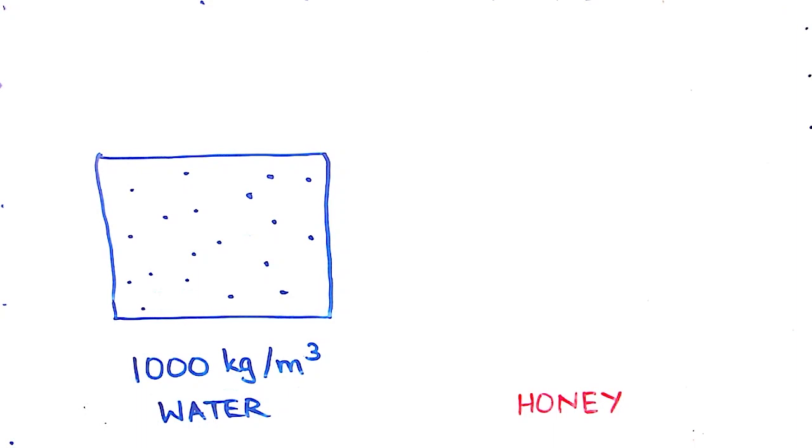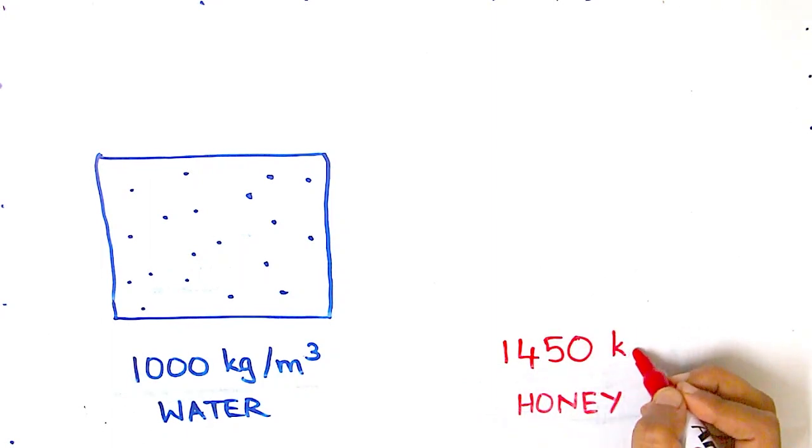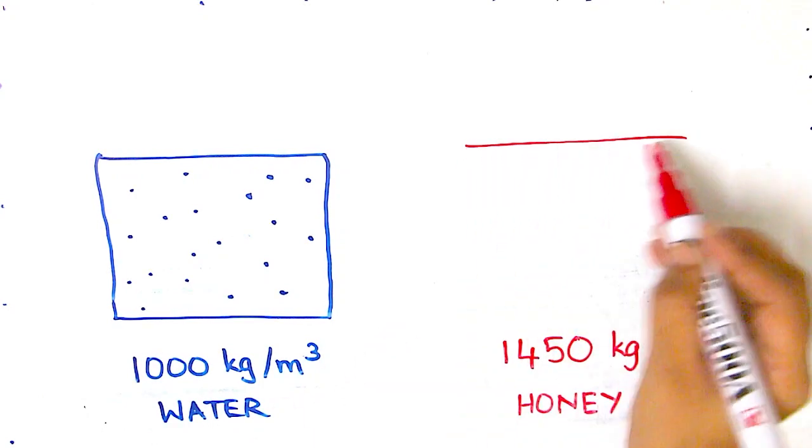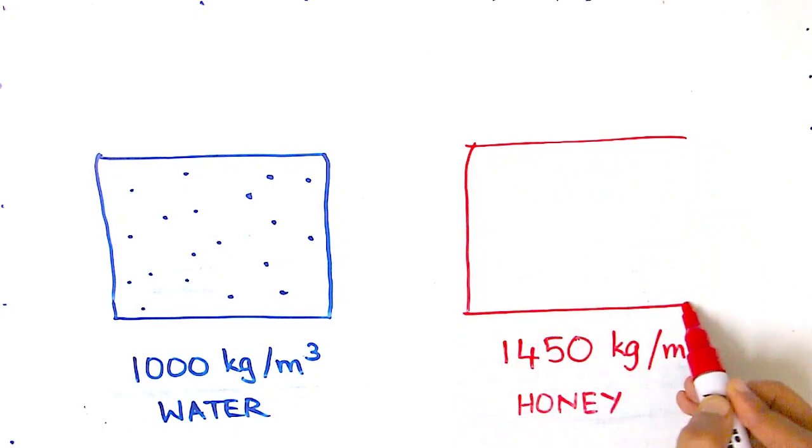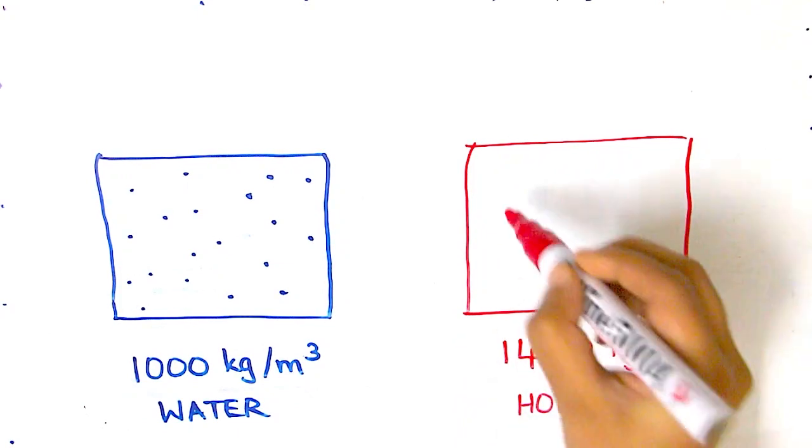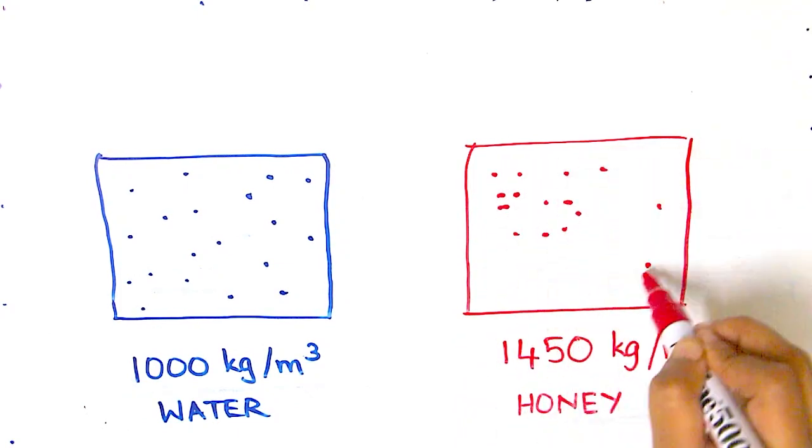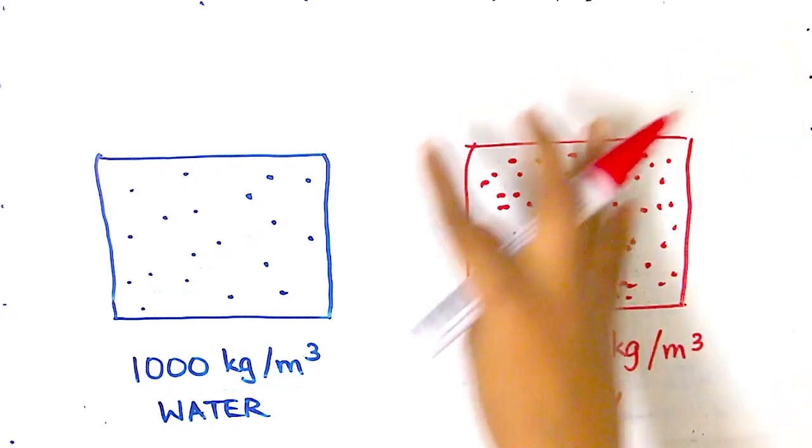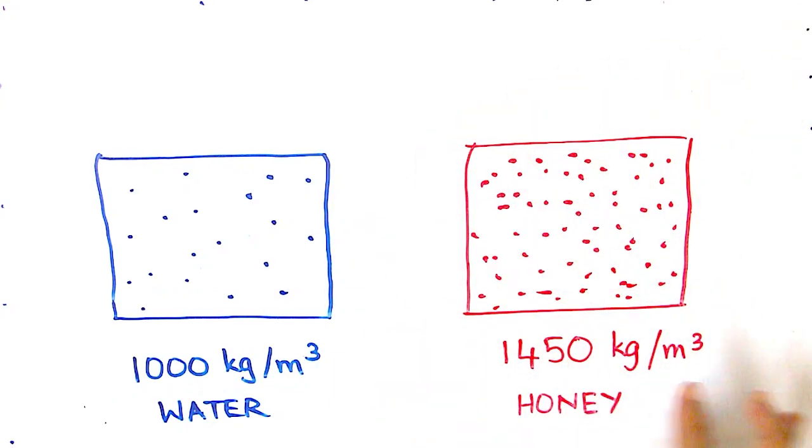Now let's look at the honey. In this case, the density of honey is roughly 1450 kilograms per meter cube. This means that if I were to take an identical cube-shaped container and fill this with honey, the honey in this container would weigh 1450 kilograms.